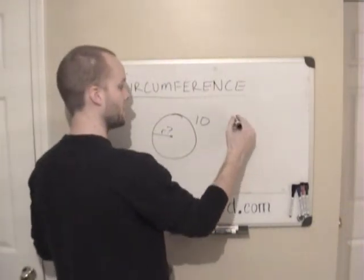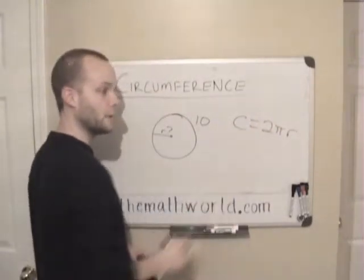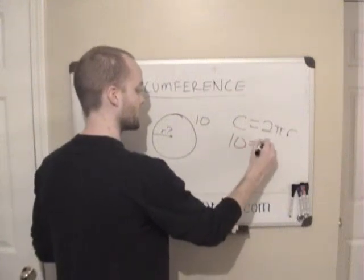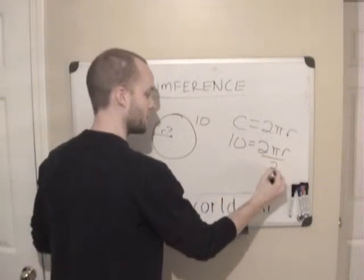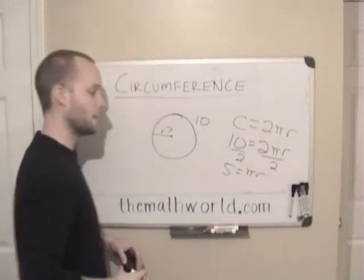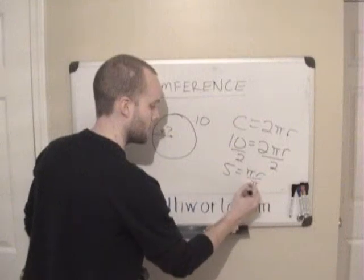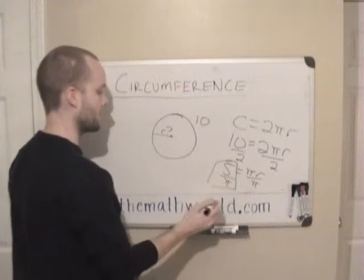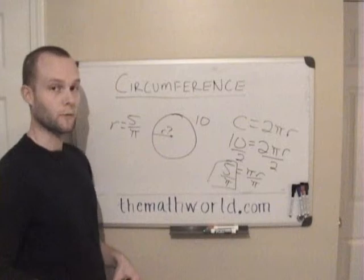Our formula is c equals 2πr. Now we have our c, we know what c is, it's 10. So we have 10 equals 2πr. We're going to divide by 2 on both sides, so we have 5 equals πr. Then we get r by itself by dividing both sides by π. A lot of times you'll be asked to write it in this form: r equals 5 over π.